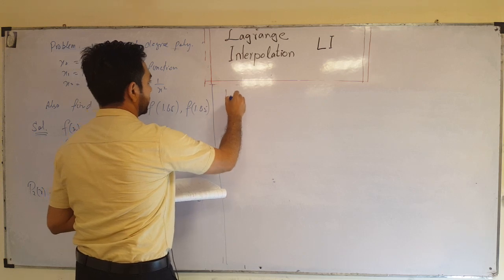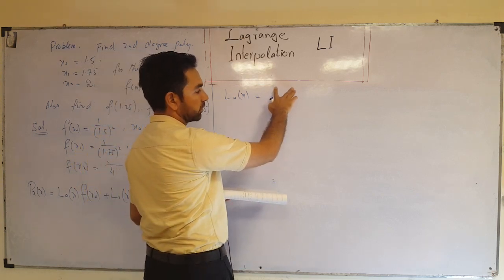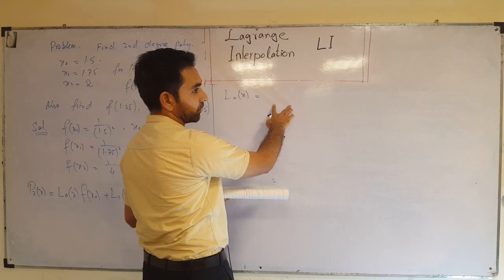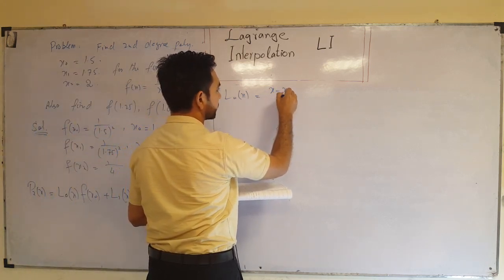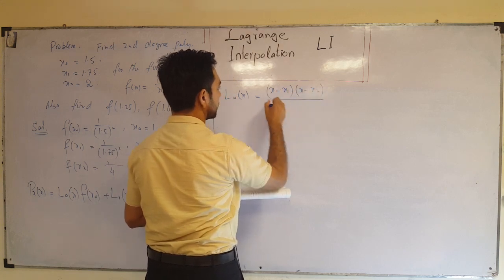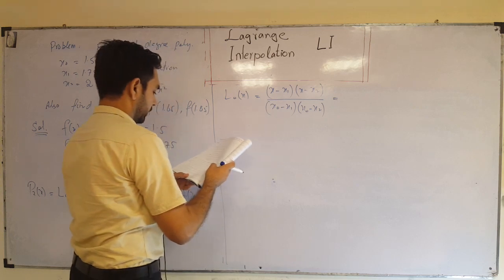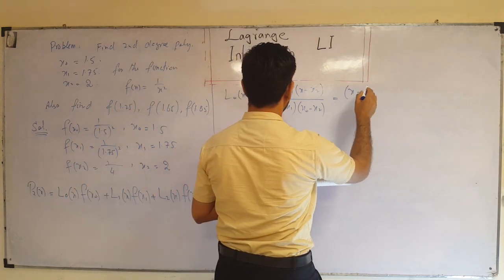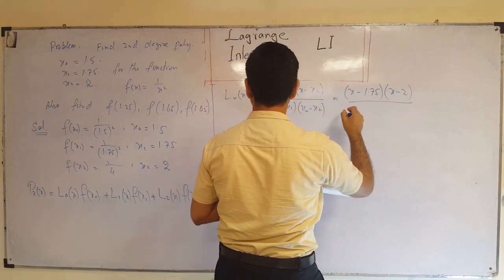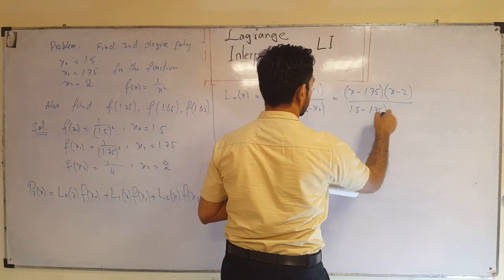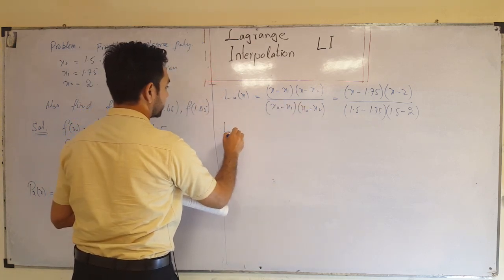For L₀(x), the numerator has all terms except x₀, so we have (x − x₁)(x − x₂), and in the denominator we subtract from x₀: (x₀ − x₁)(x₀ − x₂). Substituting values: numerator is (x − 1.75)(x − 2), denominator is (1.5 − 1.75)(1.5 − 2). You can simplify that or leave it as is.